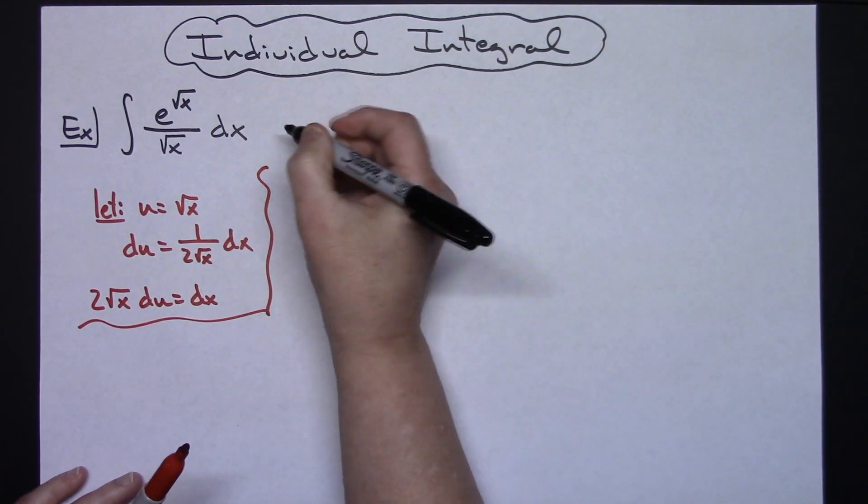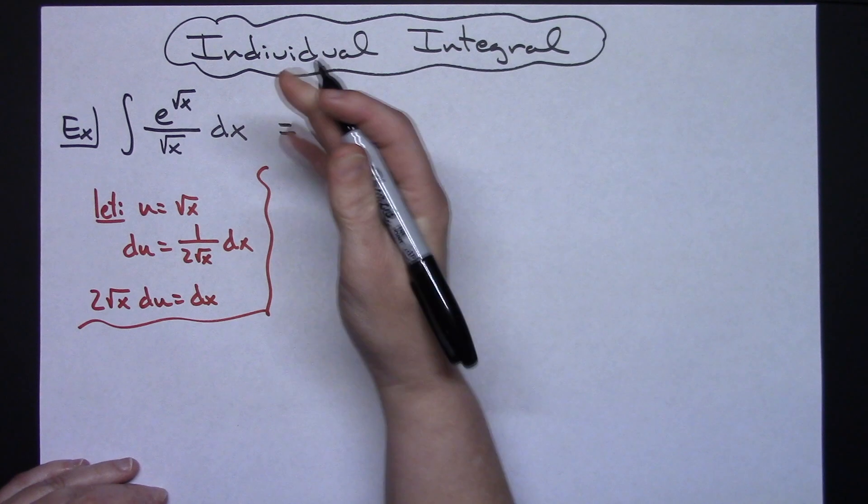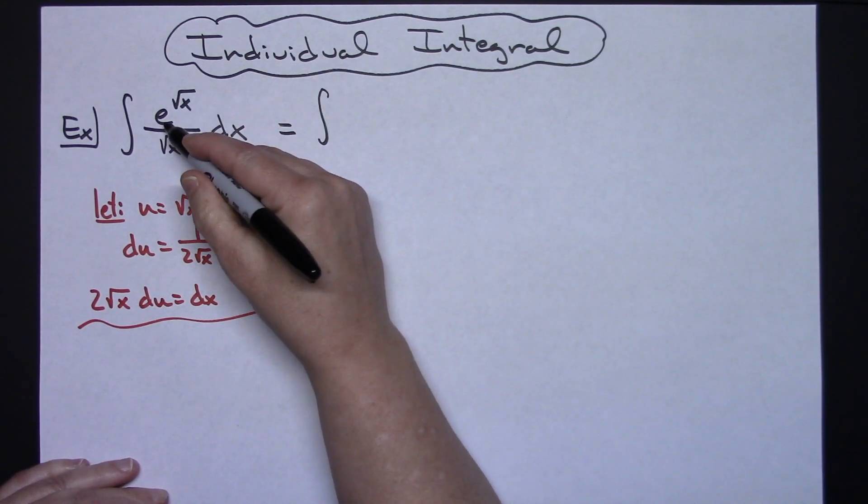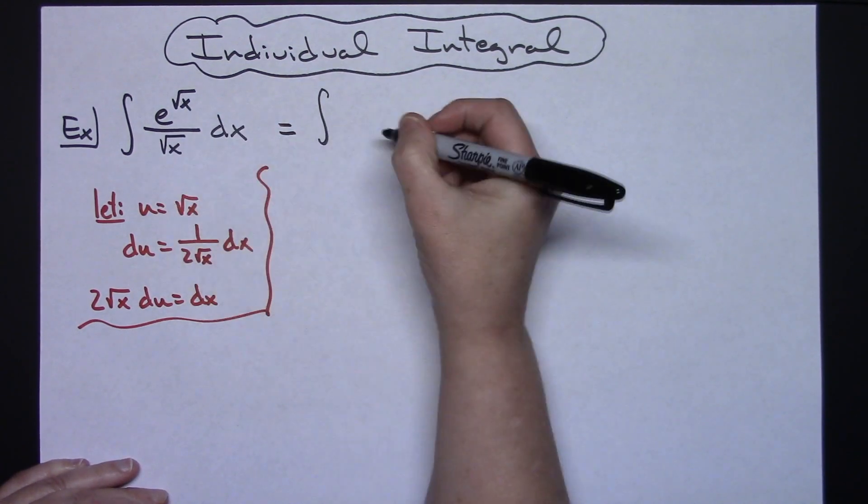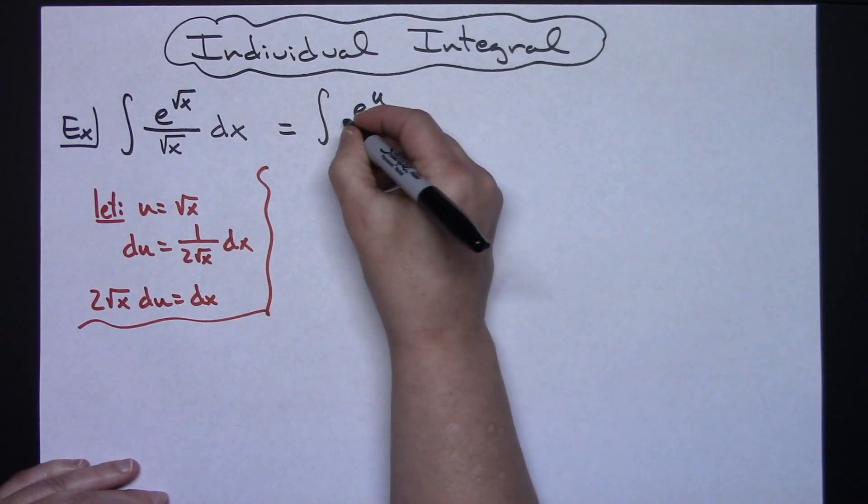Okay we'll come back up here to this original integral and we will start making some substitutions. So I'll have the integral of e to the, we'll substitute a u in there, e to the u all over.